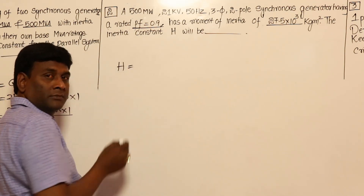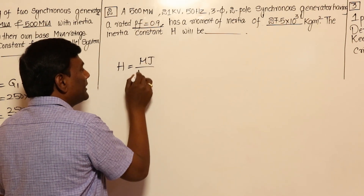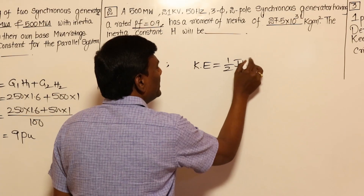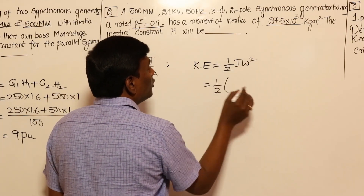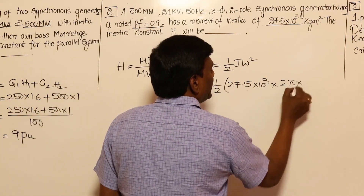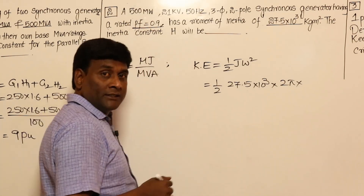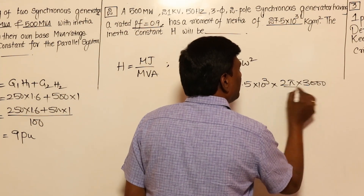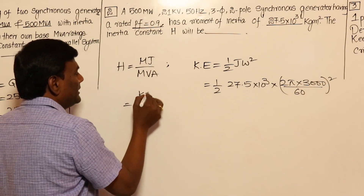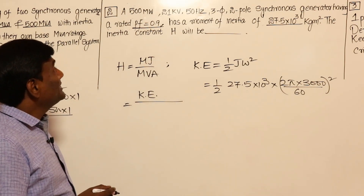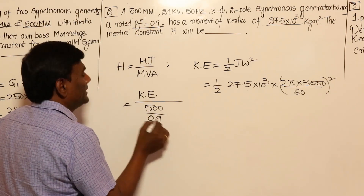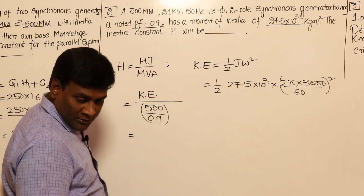The definition of inertia constant H is in MJ per MVA. We have to calculate kinetic energy: KE = ½Jω². So KE = ½ × 27.5×10³ × (2π × 3000/60)², since for a 2-pole 50 Hz machine, speed is 3000 RPM. Then H = KE divided by MVA, where MVA = 500 MW / 0.9 power factor. I got an answer of 2.442.